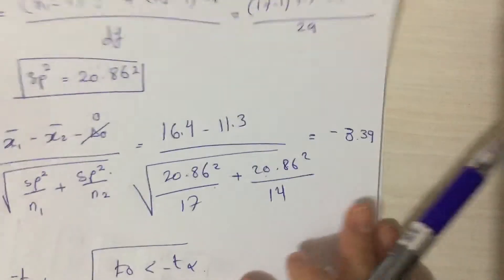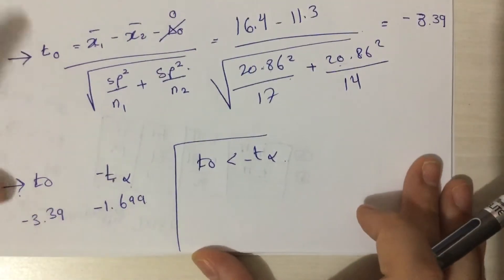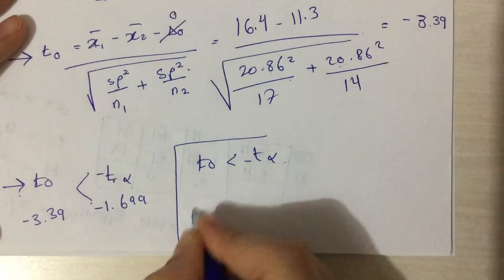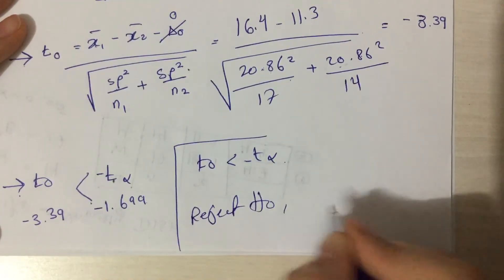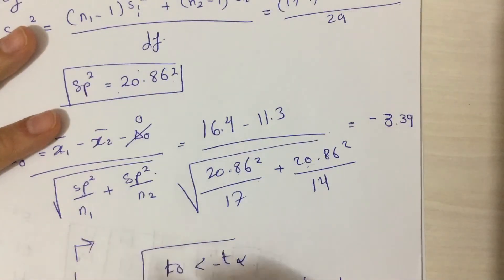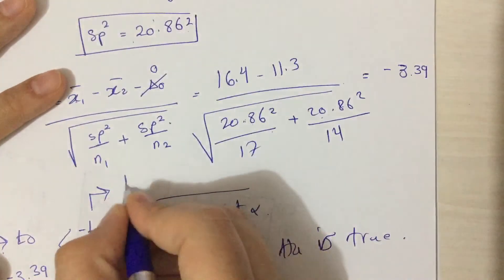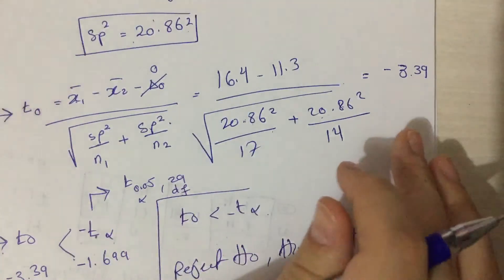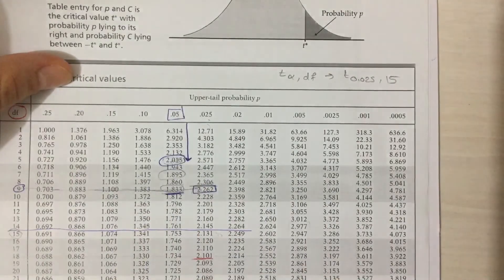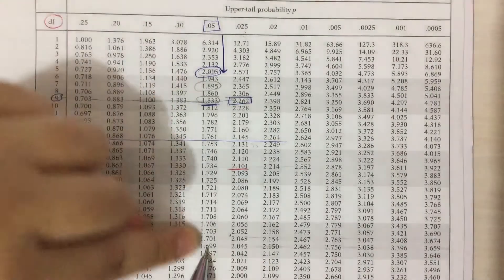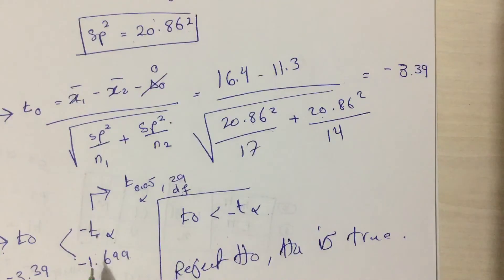We have discussed the method in previous videos. In this case, we reject H0 and HA is true. The critical value t(0.05, 29) was found from the t-table: with degrees of freedom 29 and alpha 0.05, we get t = 1.699.